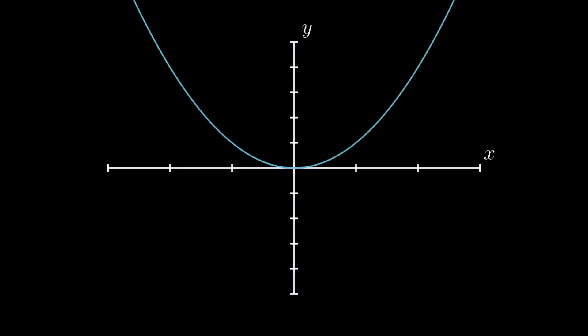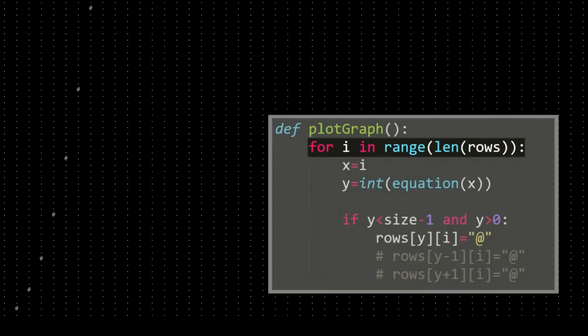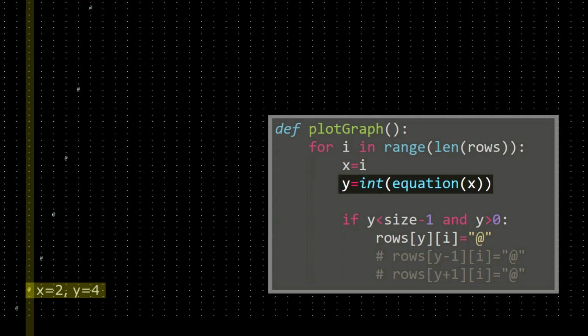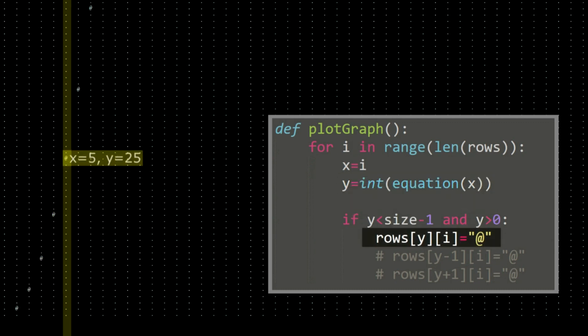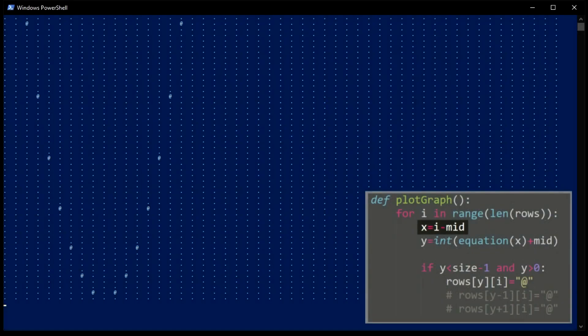The next step is to plot a graph, such as y = cos(x²). This was done by iterating through each column, which is our x value, then finding the output — our y value. Then I would insert an at symbol at that specific pixel if the y value is within our limit. In order to move the origin to the centre of our plot, we can simply move the graph to the right by half the total length, then move the graph up by half the total length as well.